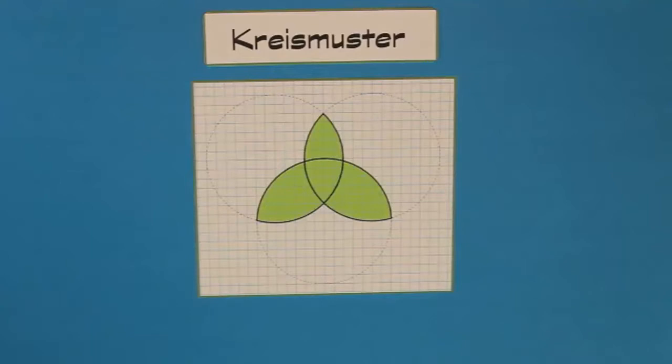Wenn man so eine Vorlage hat, die man nachzeichnen soll, geht man am besten immer in den folgenden Schritten vor. Das ist nämlich wichtig, weil die Kreismuster mit der Zeit komplizierter und größer werden. Also drei Schritte.